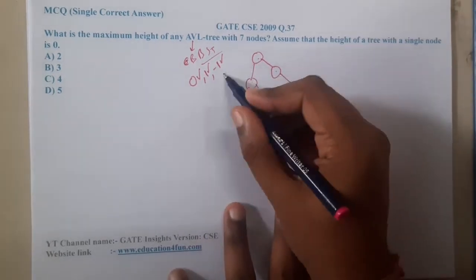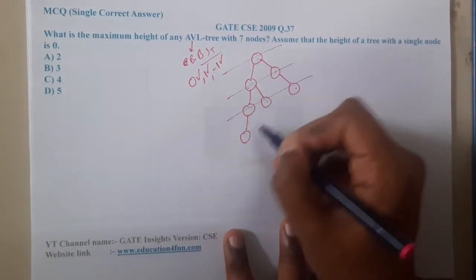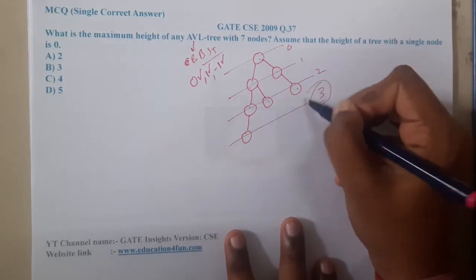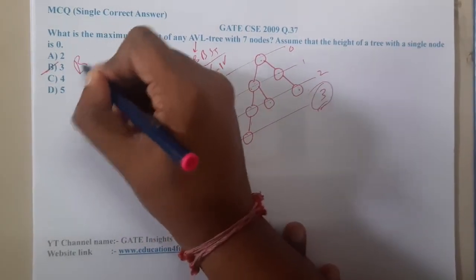Now what is the height? It is at level zero, level one, level two, level three. So the answer is level three. Quite simple, right?